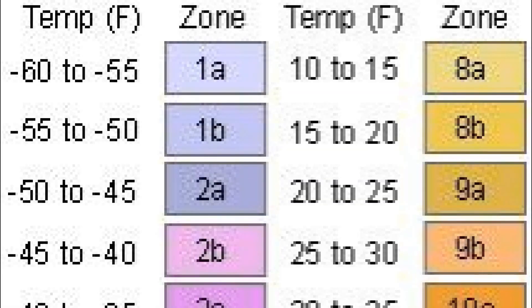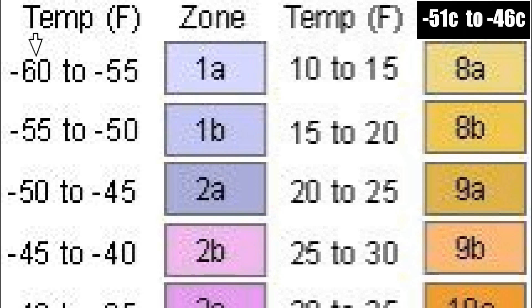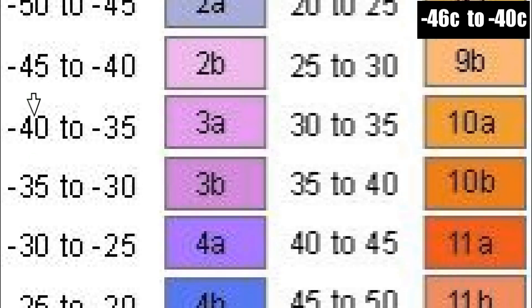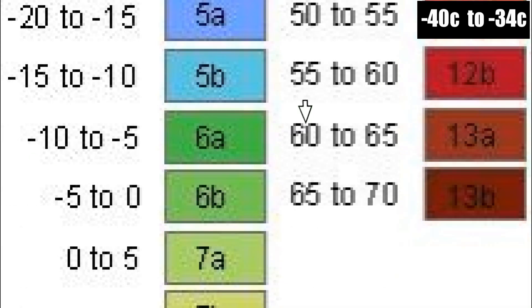Each zone represents a 10 degree Fahrenheit range. Zone 1 has an average minimum temperature range of negative 60 to negative 50. Zone 2's range is negative 50 to negative 40. Zone 3's is negative 40 to negative 30, and so on up to zone 13, which has a minimum temperature range of 60 to 70 degrees Fahrenheit.